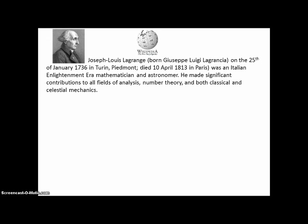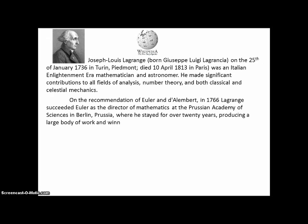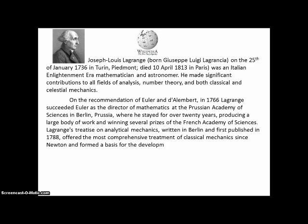Analysis is an umbrella that includes calculus, so he was also an expert in calculus. On the recommendation of Euler and d'Alembert, in 1766, Lagrange succeeded Euler as director of mathematics at the Prussian Academy of Sciences in Berlin, where he stayed for over 20 years, winning several prizes of the French Academy of Science. His treatise on analytical mechanics, written in Berlin and first published in 1788, offered the most comprehensive treatment of classical mechanics since Newton.